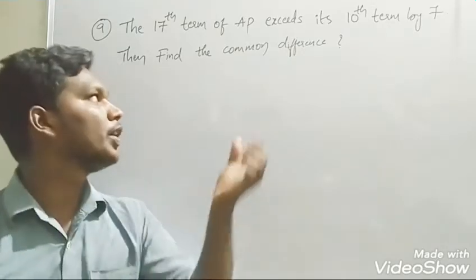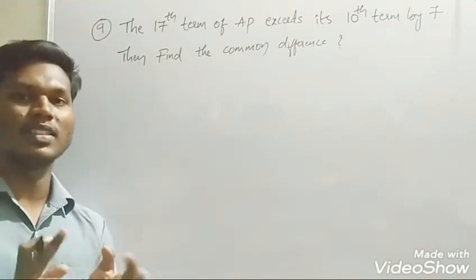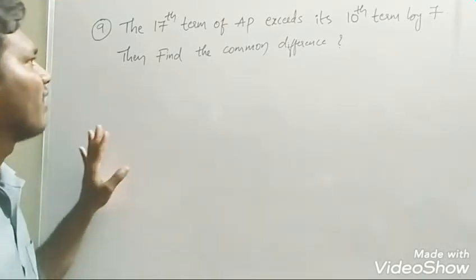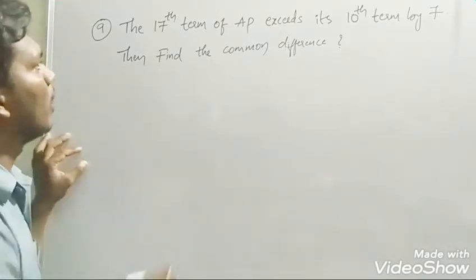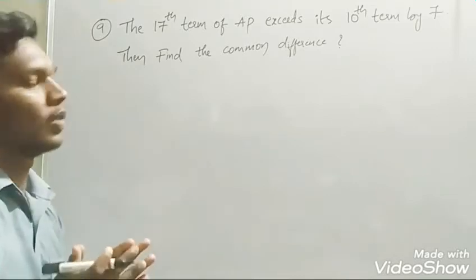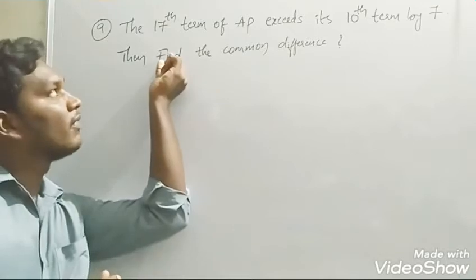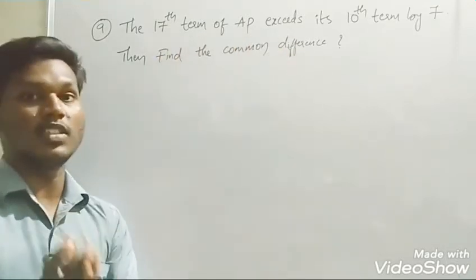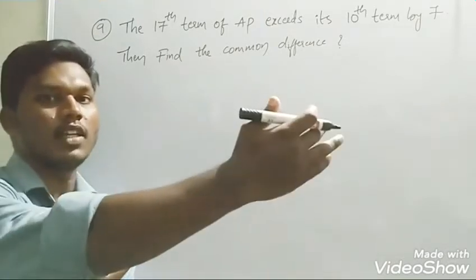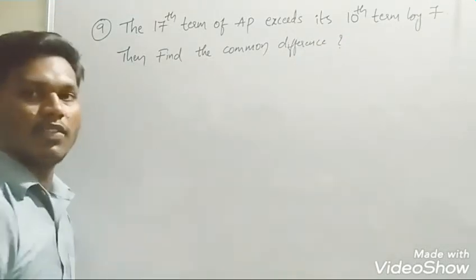In this lesson we are going to solve problem number nine. In the previous class we discussed problems six and seven; eight is similar to the seventh problem. Problem number nine: the 17th term of an AP exceeds its 10th term by seven. Find the common difference. The difference between the 17th term and the 10th term is seven.